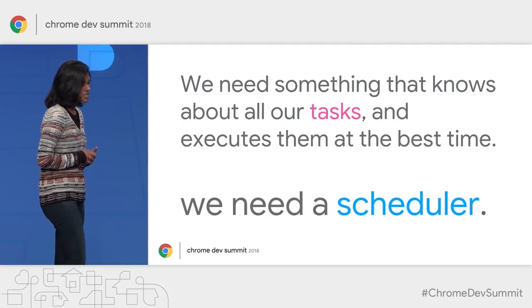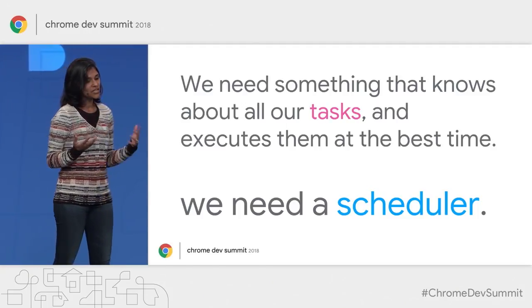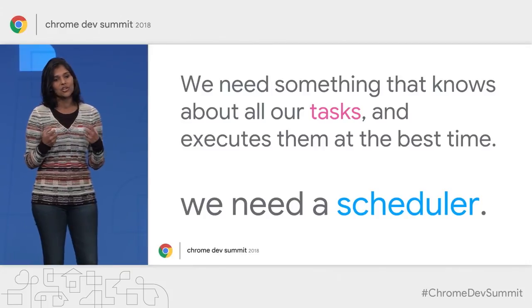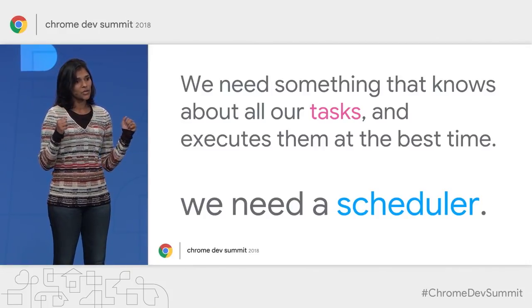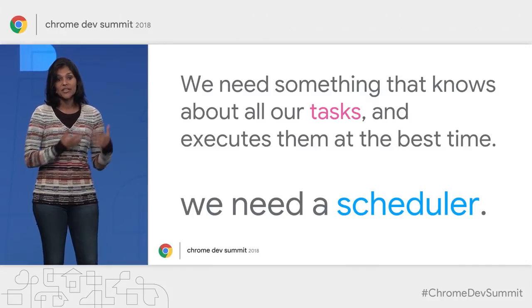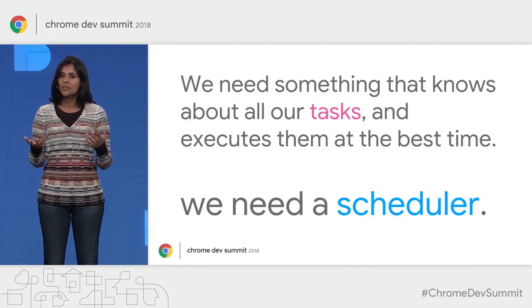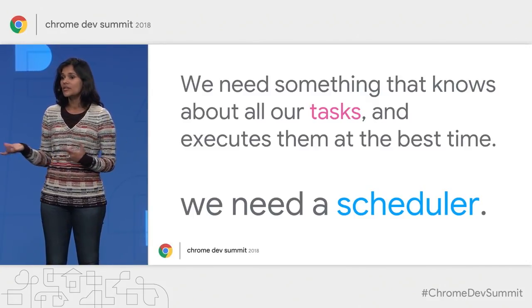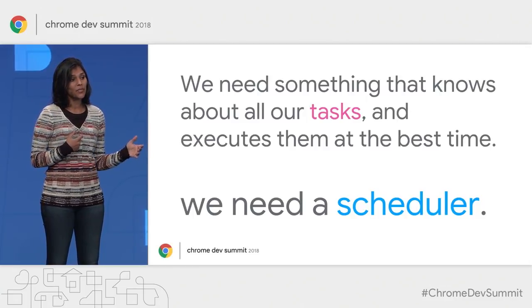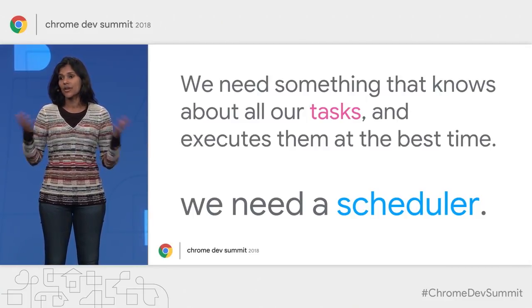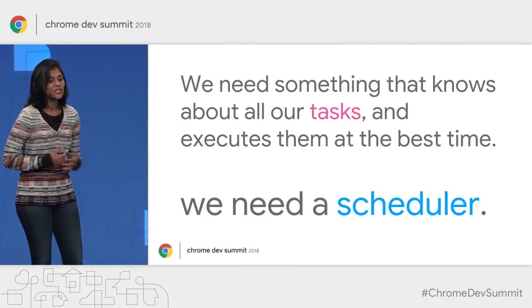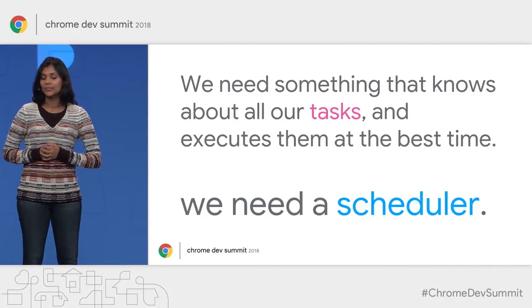Stepping back a bit, what we need here is some way to provide our chunks of work — our tasks — to a system that can hold them, say, in a task queue. This system can then make good decisions about when to take tasks out of the queue and execute them at an appropriate time based on everything that is going on. And this is the definition of a scheduler.